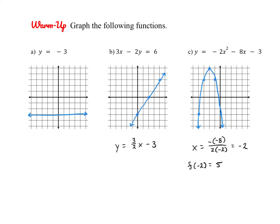Go ahead and check your work. This first one is a constant function, so it's y equals negative 3, a horizontal line at y equals negative 3. This is a linear function, so if you rewrite it in slope-intercept form, it's a little bit easier to graph. And then this is a quadratic function, so I'd start by finding the vertex using the vertex formula, or you could rewrite it in vertex form, and then find a couple of additional points.